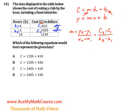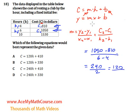Okay, so c2 is 1,050, c1 is 810, h2 is 6, h1 is 4. Okay, so 1,050 minus 810, that's 240. 6 minus 4 is 2. 240 divided by 2 is 120. So that is the slope, and we're going to plug it back in here.